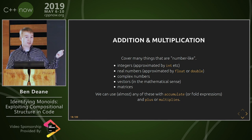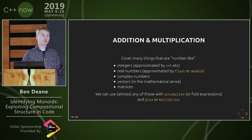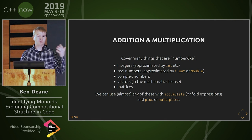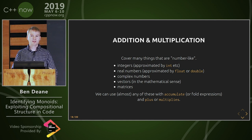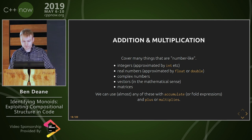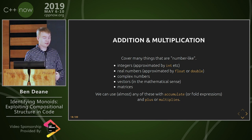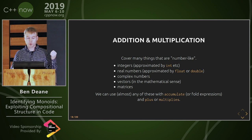Matrix multiplication is the first thing we really come across in our mathematical career that is not commutative. So it's interesting in that sense. Anyway, any of these are monoids.